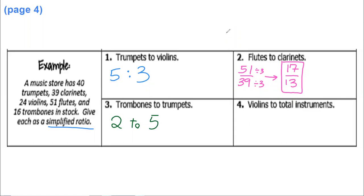We have more trumpets than trombones, about two and a half times as many actually. And now finally, violins to total instruments. Let's do a kind of violin color. So violins to total instruments. So violins we have 24 violins, out of the total instruments. Total is going to be the 40 plus the 39 plus the 24 plus the 51 plus the 16, which is 170. Now that is definitely divisible by 2, so you get 12 over 85.